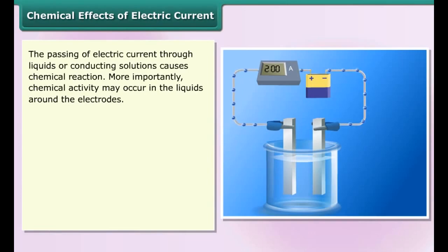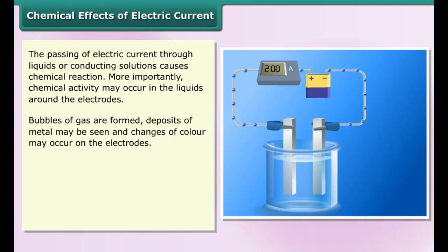Electroplating is used for coating metal objects with a thin layer of a different metal. For example, chromium plating is done on many objects such as car parts, bath taps, kitchen gas burners, bicycle handlebars, wheel rims, and many others.